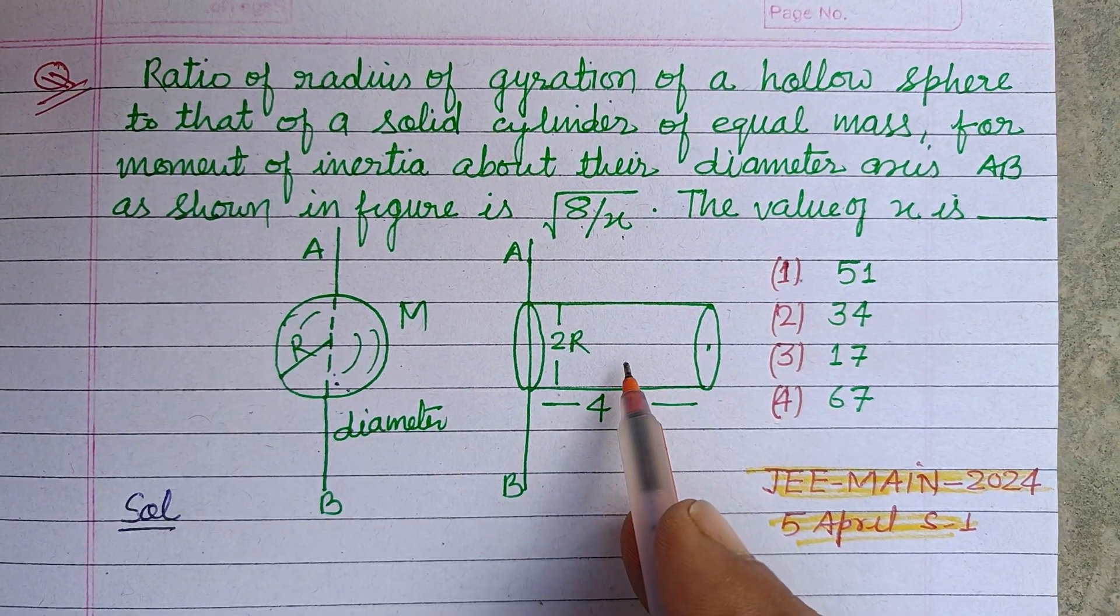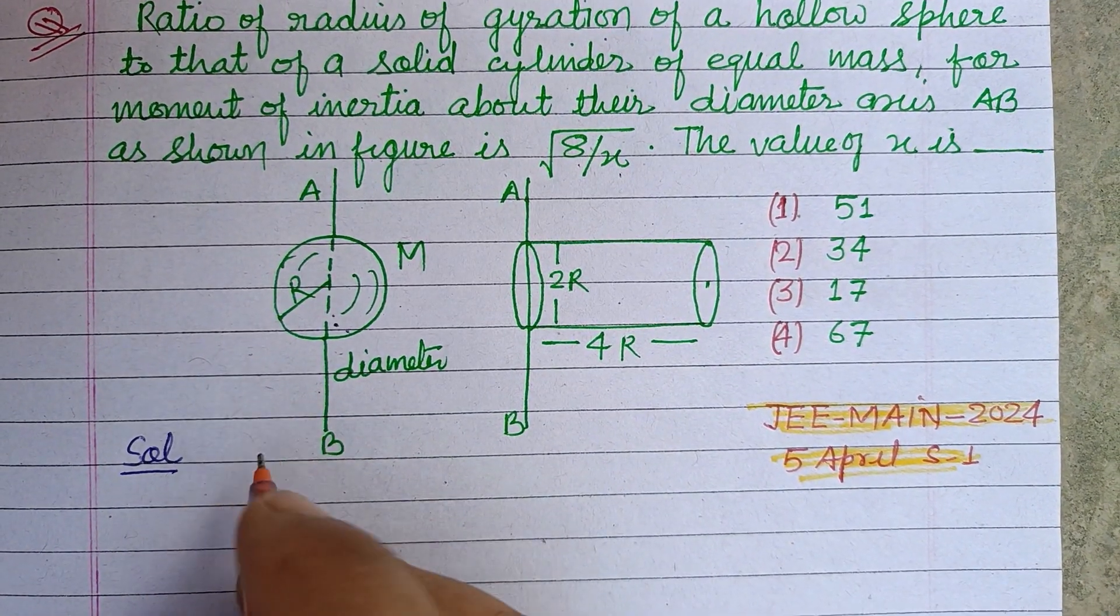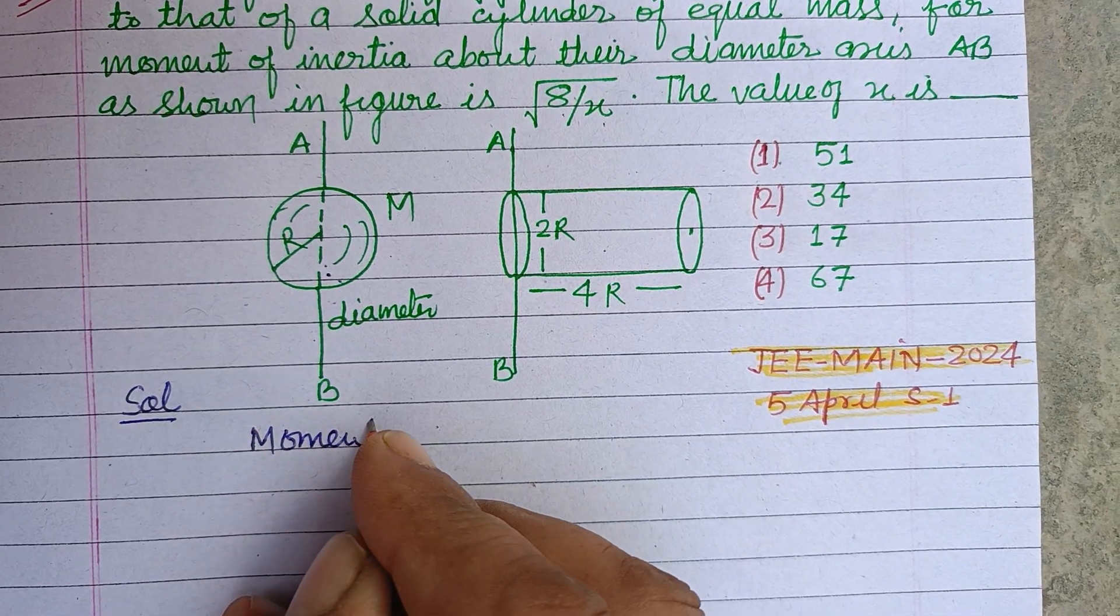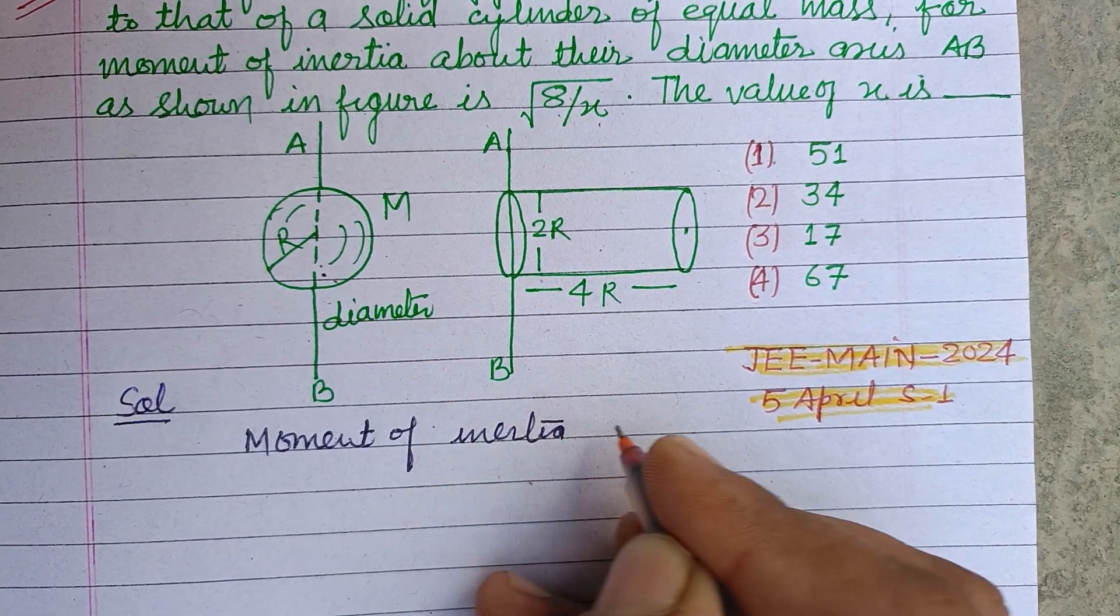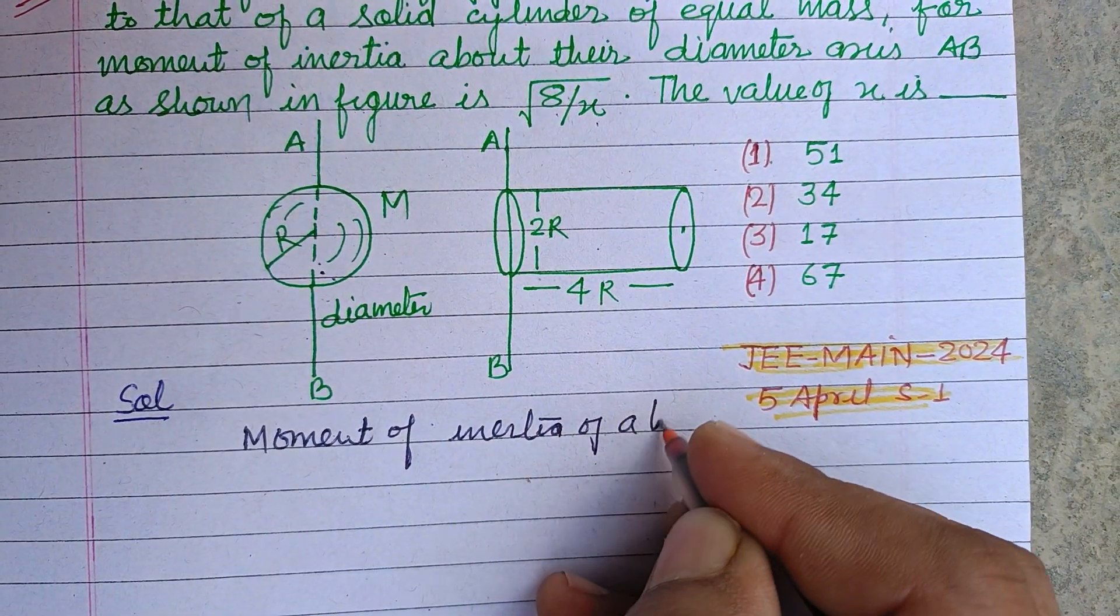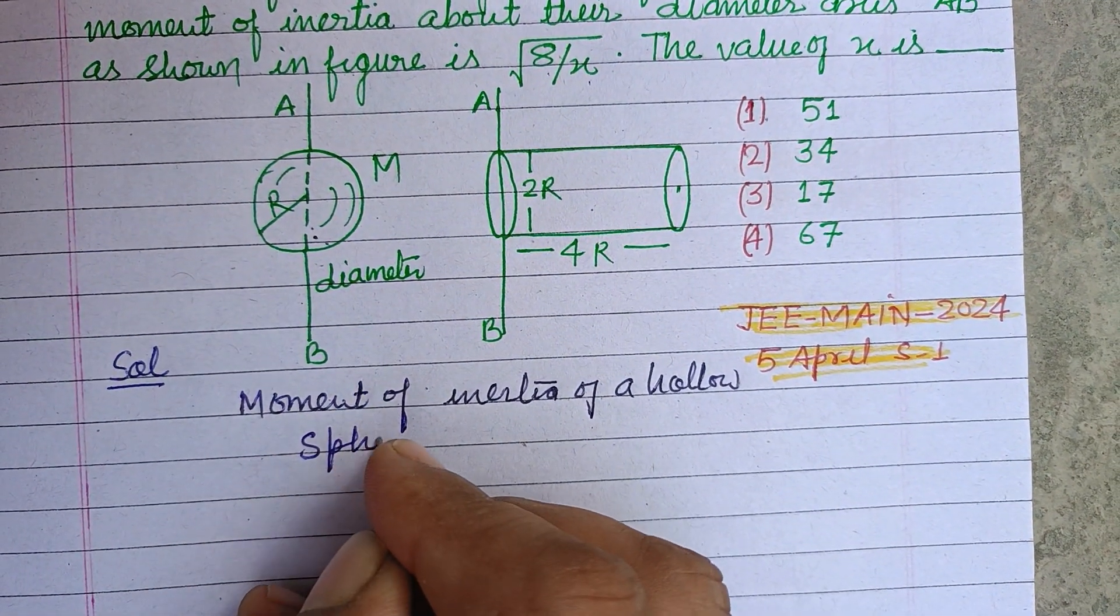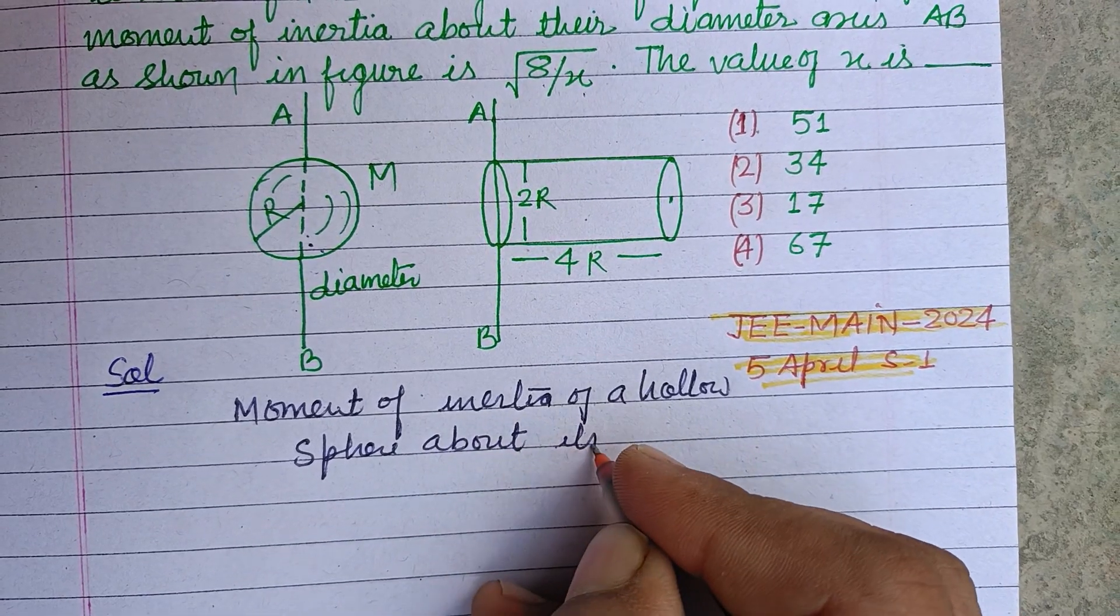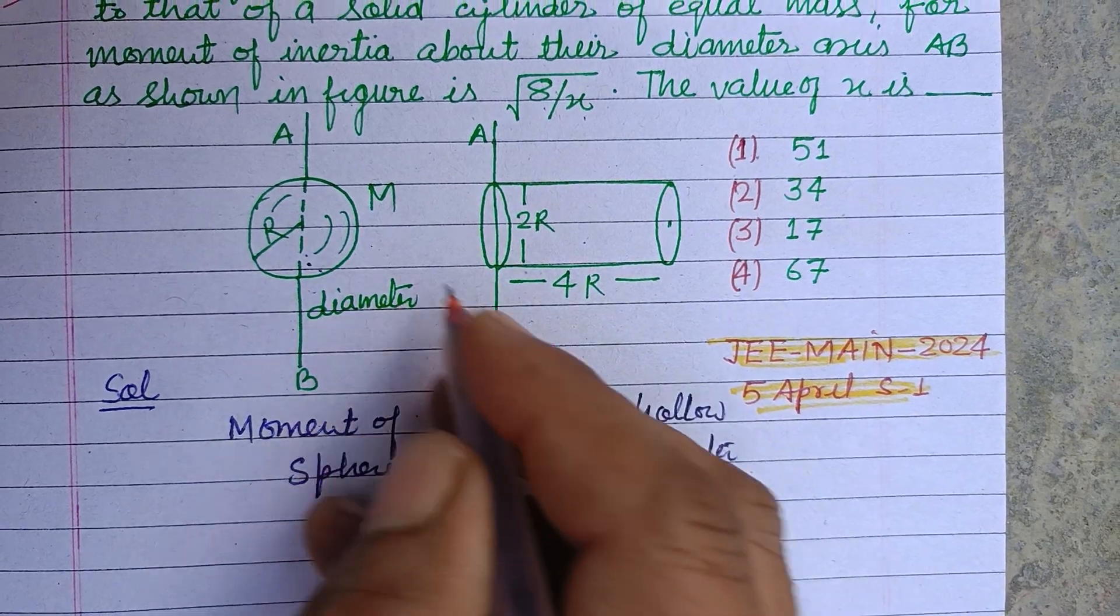A hollow sphere and a solid cylinder are given. So first we find the moment of inertia of a hollow sphere about its diameter as the rotational axis.